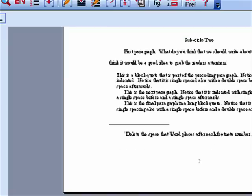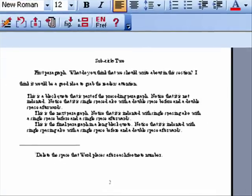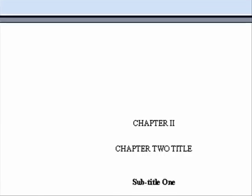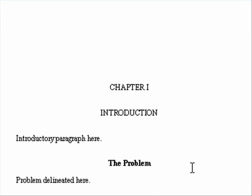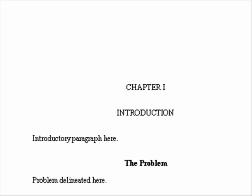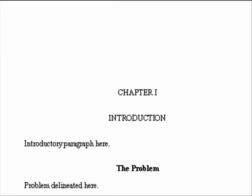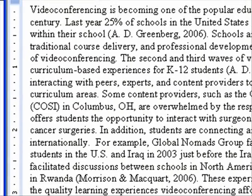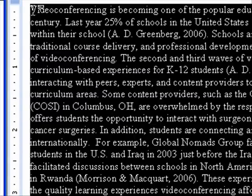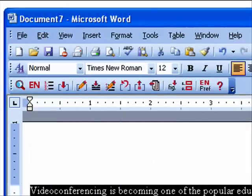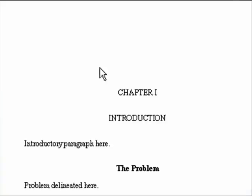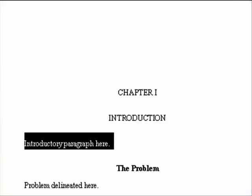You probably aren't starting to write here in the template — you probably already have some text written. So one of the things you want to do is make sure when that text comes over, it's not using its old style information but is using the new styles that are here in the template. Let me go get some text — here's a little paragraph I had written before. I'm going to highlight this and go up to Edit and Copy, then switch over to my new document.